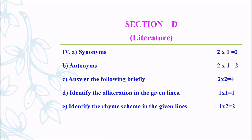Next one is Identify the alliteration in the given lines — they will give you 2 lines, and you have to identify the alliterated words, for 1 mark. Next one is Identify the rhyme scheme in the given lines — they will give you 4 lines from the poem, and you have to identify the rhyme scheme, for 2 marks.